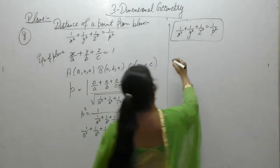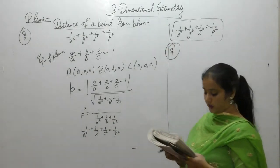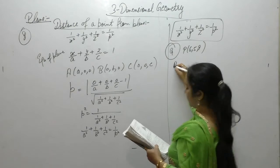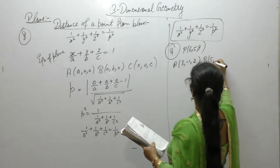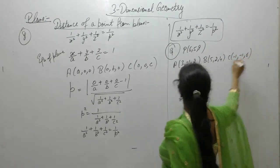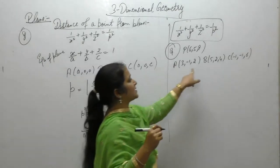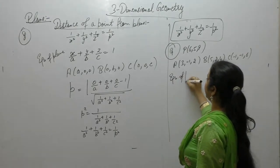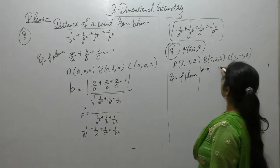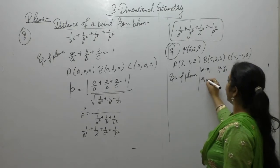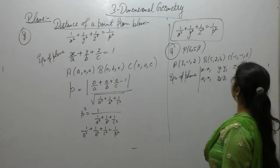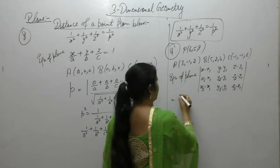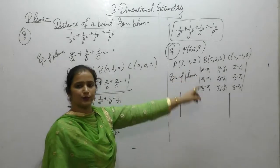Now, next one: find the distance between the point (6, 5, 9) and the plane determined by the points (3, -1, 2), (5, 2, 4), and (-1, -1, 6). First, we want to find the equation of the plane passing through these three points. The formula for the Cartesian equation is the determinant: (x minus x1, y minus y1, z minus z1), (x2 minus x1, y2 minus y1, z2 minus z1), (x3 minus x1, y3 minus y1, z3 minus z1).